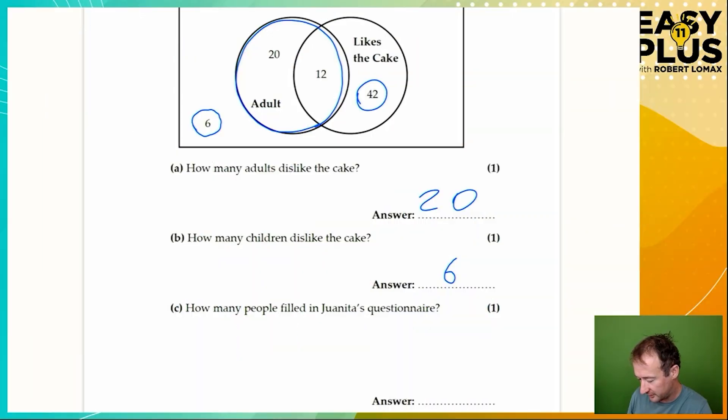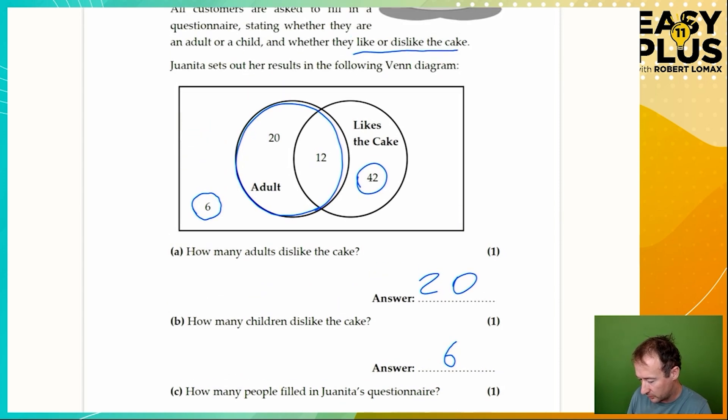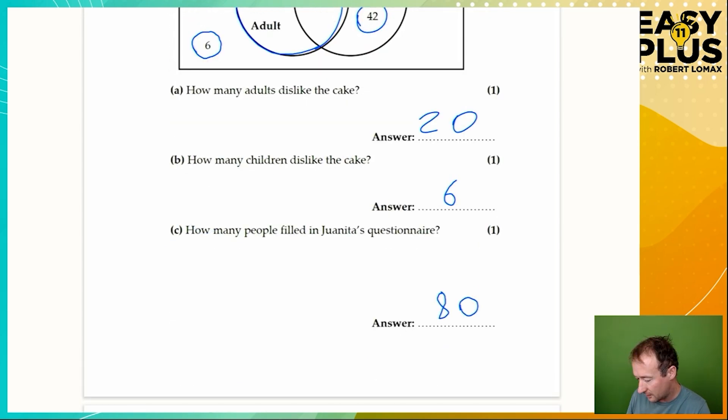How many people filled in Juanita's questionnaire? This one should be relatively easy. We need to add 42 and 12 is 54, plus 20 is 74, plus 6 is 80. The answer is 80.